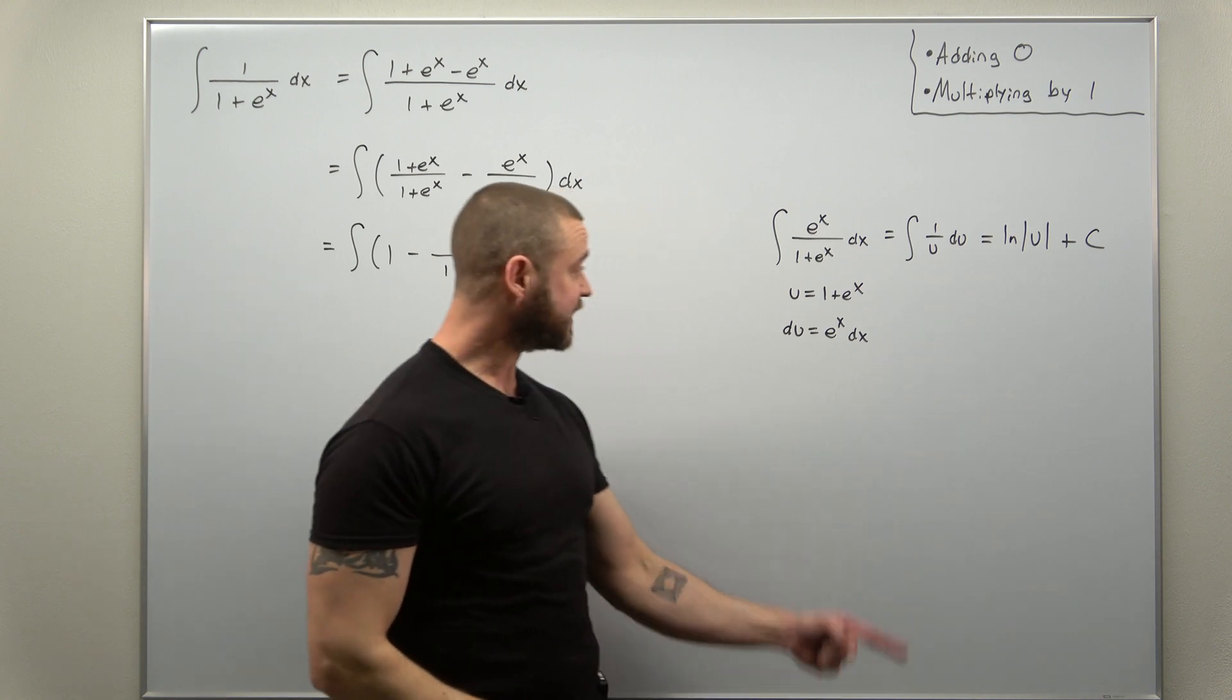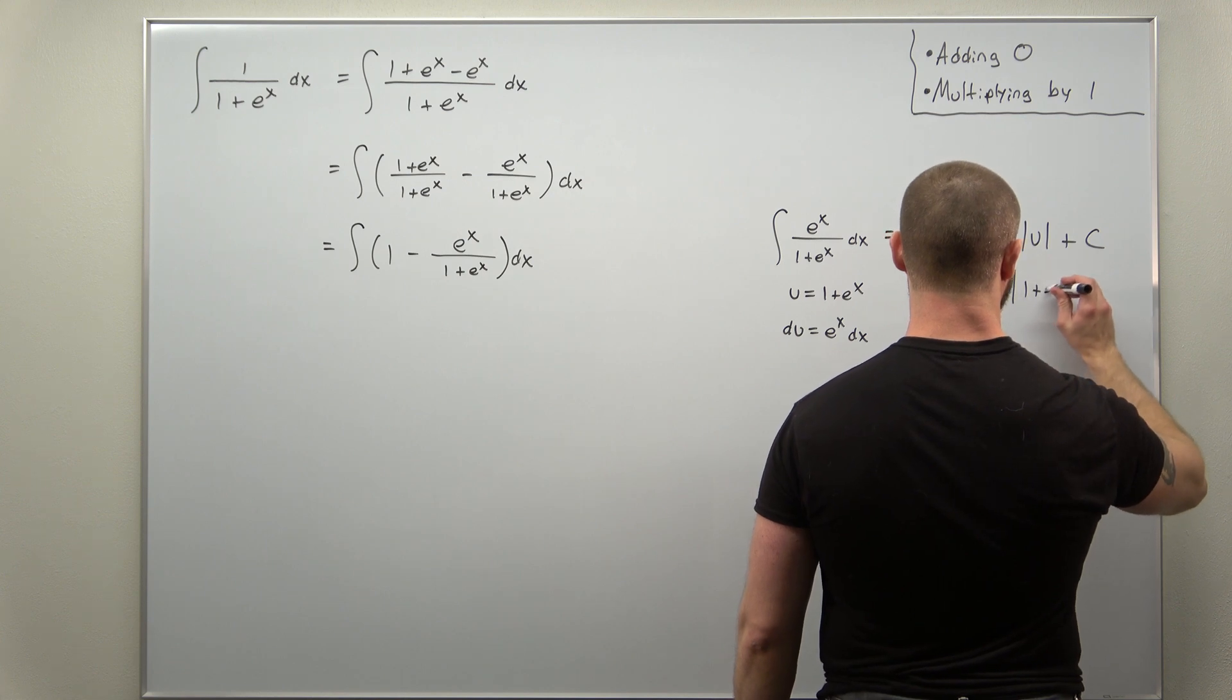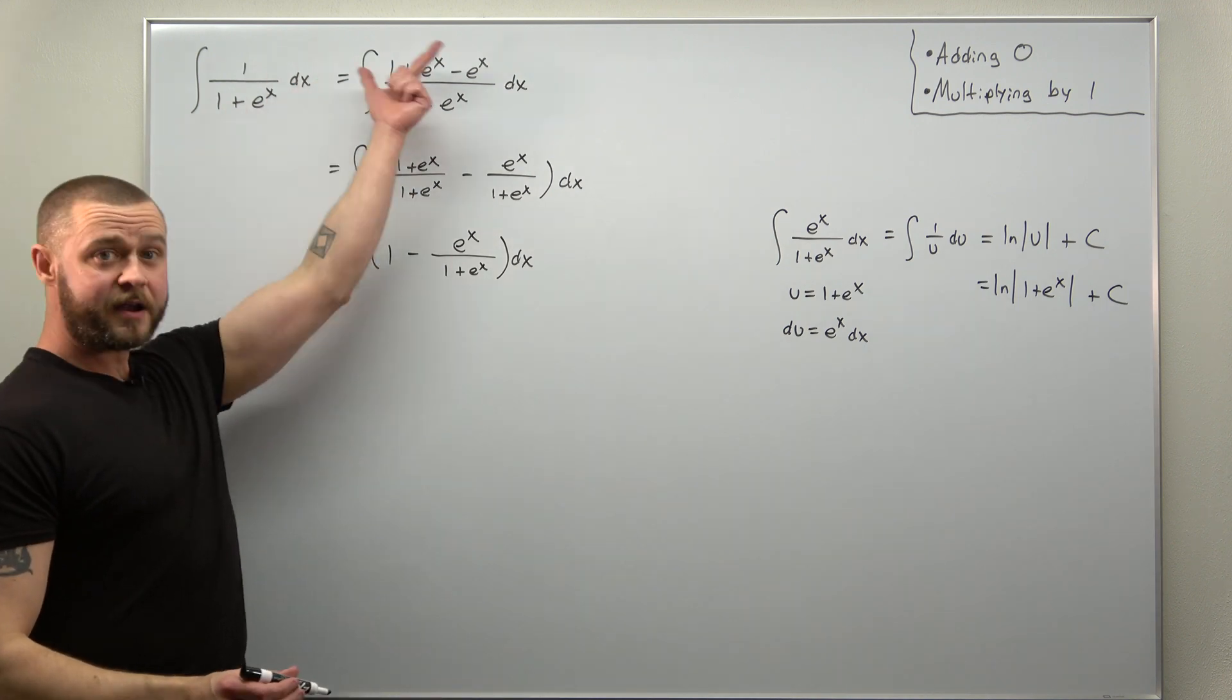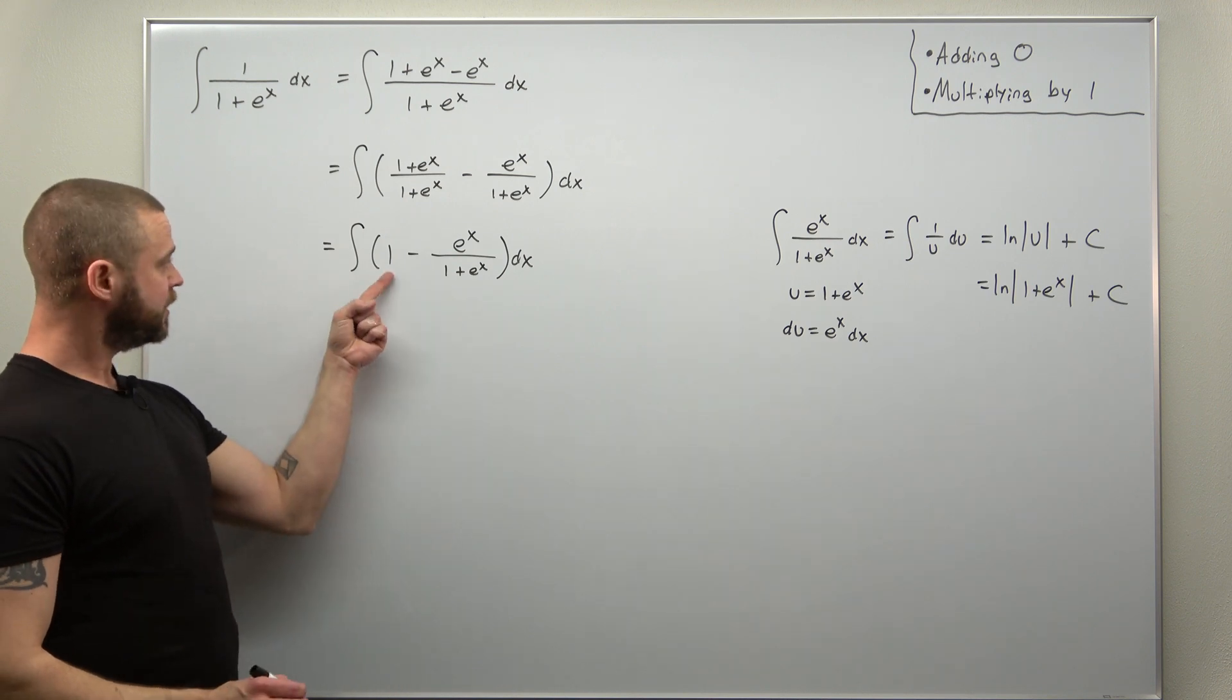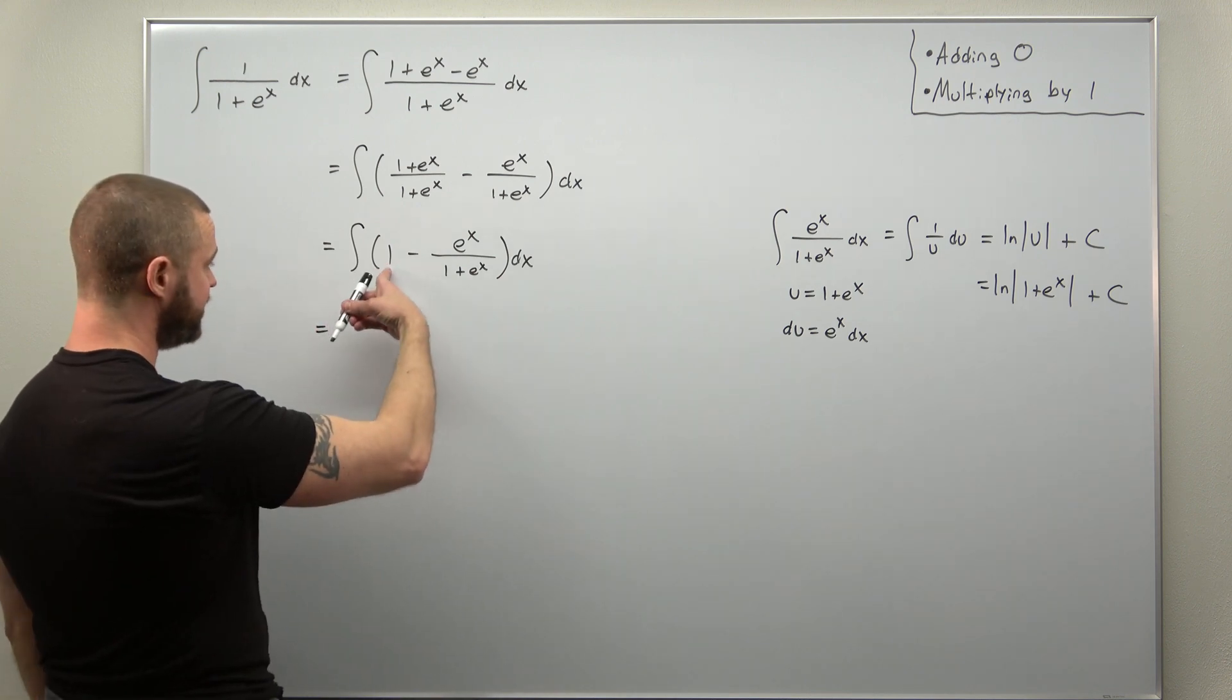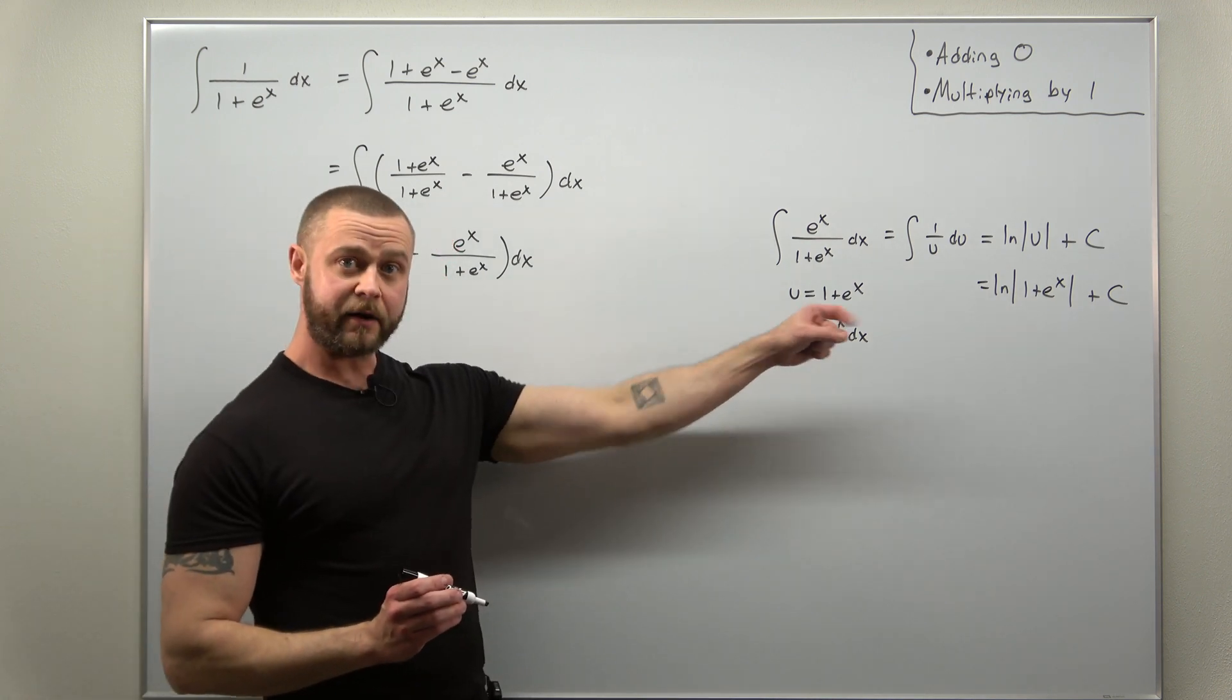And we just need to now back-substitute to u which was 1 plus e to the x. And that's basically the work for evaluating this integral. But don't forget we split that into two terms. Your 1 that's going to integrate to x. So we get our antiderivative x and then minus the integral of this term or that function which we worked out over here.